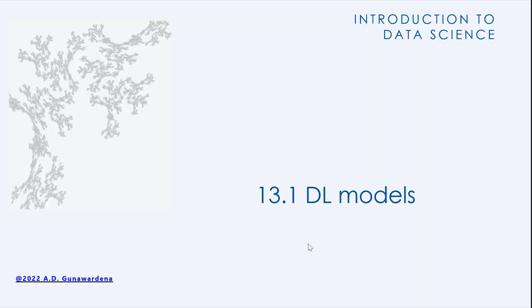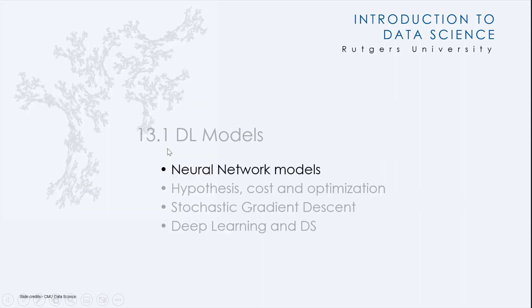So today, we're going to discuss deep learning models, and that's the purpose of this lecture. In the process, we'll talk about neural network models, some hypotheses, cost, and optimization based on canonical neural network problems, and the idea called stochastic gradient descent, and then finally we talk about deep learning and data science.